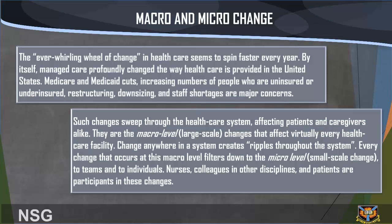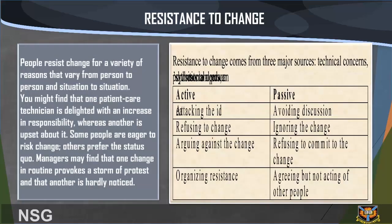Every change that occurs at the macro level filters down to the micro level — small-scale change — to teams and to individuals. Nurses, colleagues in other disciplines, and patients are all participants in these changes. Resistance to change: People resist change for a variety of reasons that vary from person to person and situation to situation. One patient care technician may be delighted with an increase in responsibility, whereas another is upset about it. Some people are eager to risk change; others prefer the status quo.